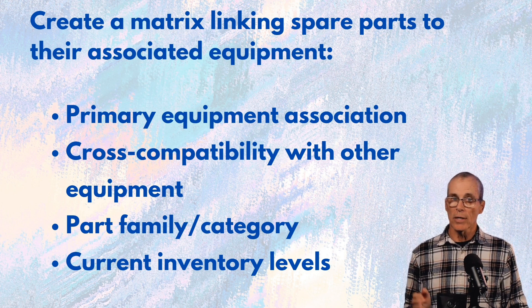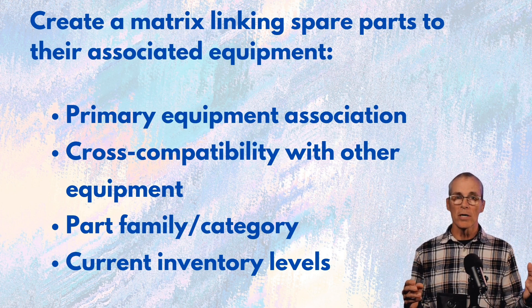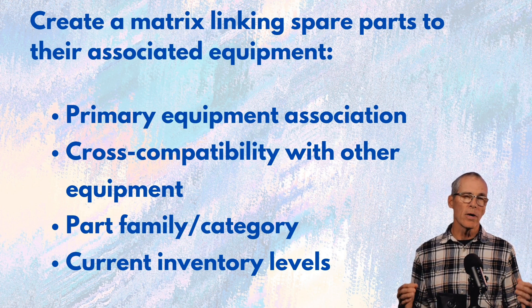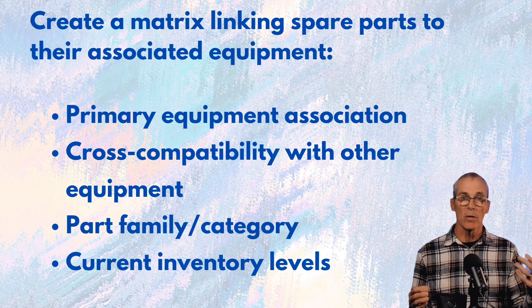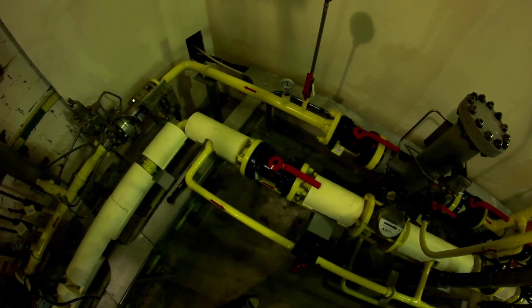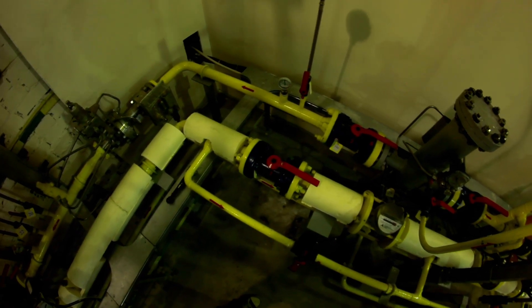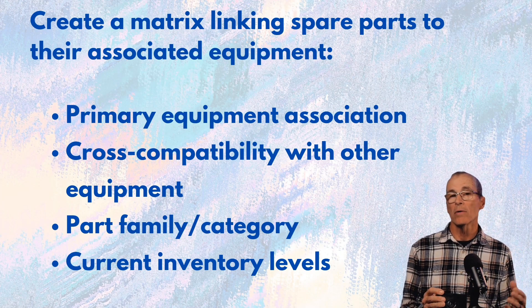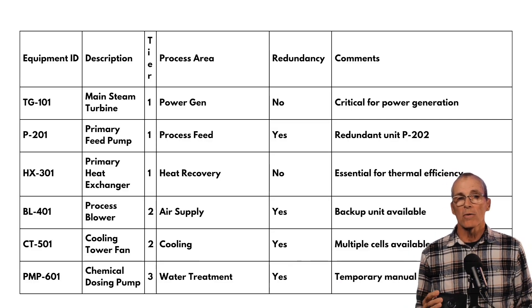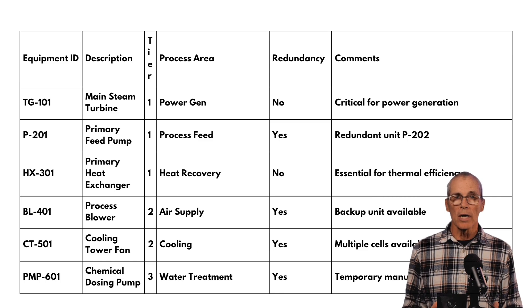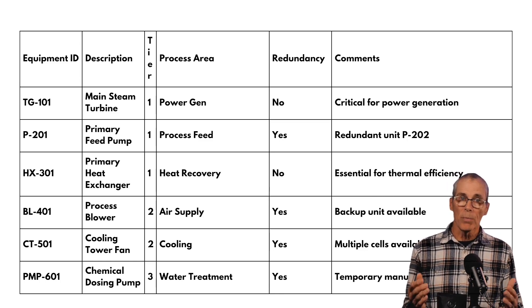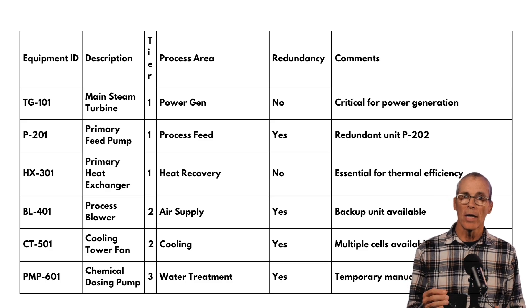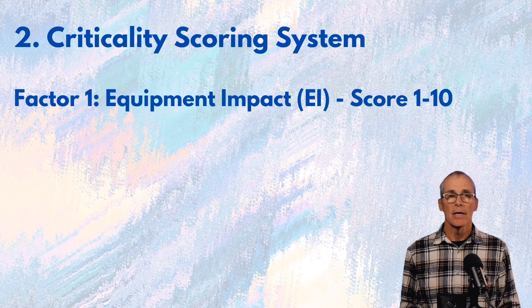We want to create a matrix linking the spare parts to their associated equipment. We're going to have the primary equipment association, find out if there's any cross-compatibility — like using the same kind of packing on pumps in different systems — and look at what part family the piece is and current inventory levels. The matrix will include the equipment ID, description, tier, process area, whether it's redundant, and comments.